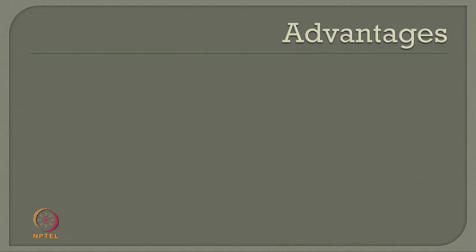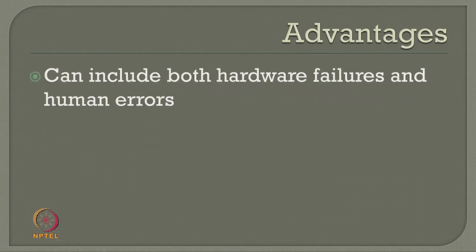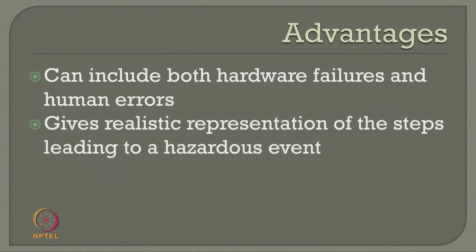Fault tree analysis has got many salient advantages. It can include both hardware failures and human errors. When FTA can do hardware analysis or failure in terms of machinery and mechanical failures, the key difference from FMEA is that FMEA does not handle the man-machine interface, whereas FTA can accommodate the probability of failure perceived as man-machine interface, including both hardware failures and human errors resulting from that failure.